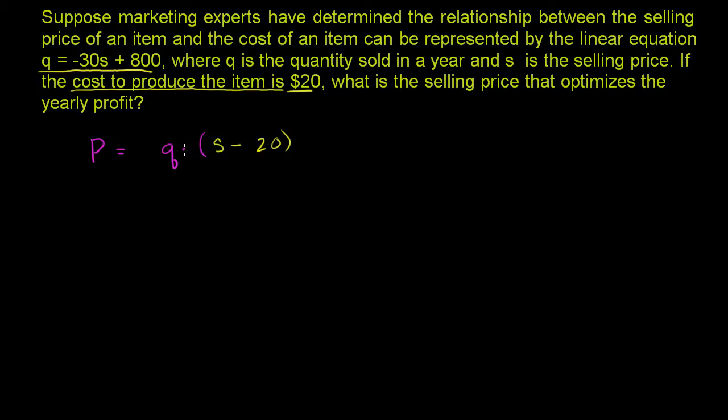So how can we figure out how to maximize this profit? Well, they gave us the quantity as a function of selling price. So we could express the entire profit as a function of selling price. So we can substitute Q equals negative 30S plus 800 right over here.